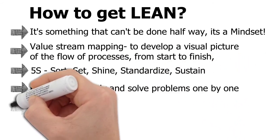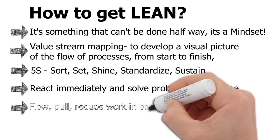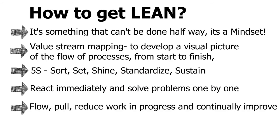The fourth step is to react immediately to any change and solve problems one by one. The fifth step is to flow and pull — reduce work in progress and continuously improve. These are the five main steps through which you can get lean. I'll come up with a next video explaining how to utilize lean methodology in testing or development and how to practically implement all these steps.